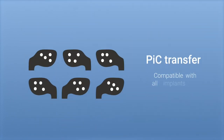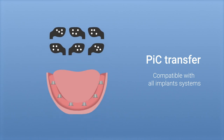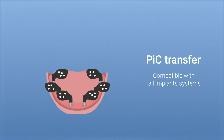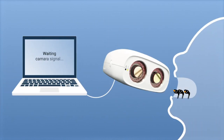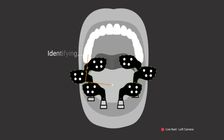The PIC abutments are impression transfers calibrated with digital 3D codes. Thanks to their design and optimized size for all configurations, they are easily screwed to the patient's implants.